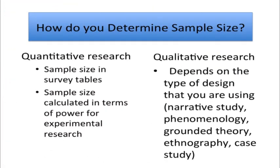In terms of sampling and sample size, there are different ways of sampling in quantitative and qualitative research. For example, in quantitative research we can turn to sample size formulas when we're doing survey projects that will tell us what type of sample size we should have. If we're doing experimental research, we can calculate sample size based on power formulas. So there are some very rigorous, systematic ways of deriving sample size in quantitative research.